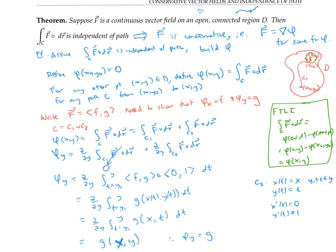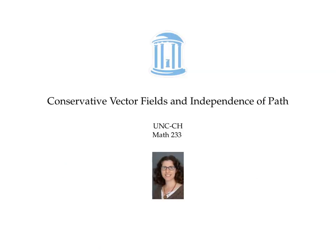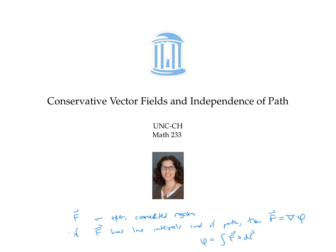So we have built a function phi such that (phi_x, phi_y) is exactly equal to the components of our vector field. In other words, our vector field F is a conservative vector field — it's the gradient of phi — and that completes the proof. In this video, we showed that for a continuous vector field on an open connected region, if F has line integrals independent of path, then F is conservative — the gradient of some potential function. We proved this by actually constructing the potential function using line integrals.